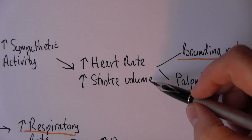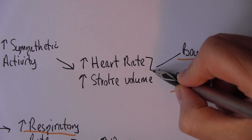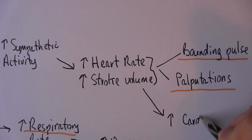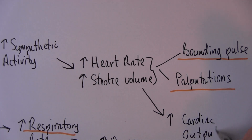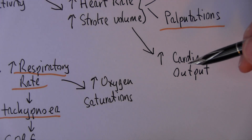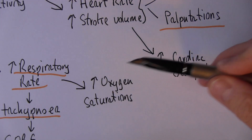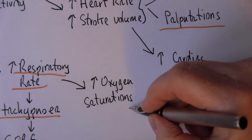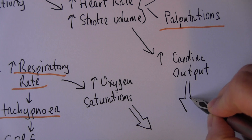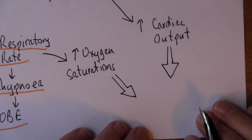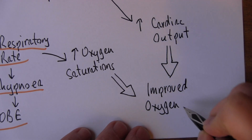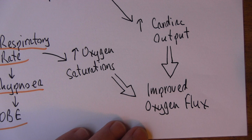The reason that heart rate and stroke volume increase is because together these two will increase cardiac output. So we've now got improved oxygen saturations and increased cardiac output, and both of these effects are going to increase what we call oxygen flux.